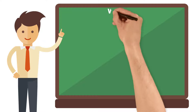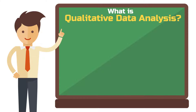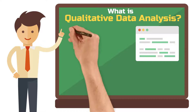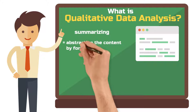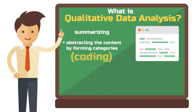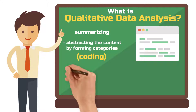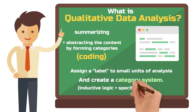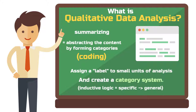Qualitative data analysis can be used to summarize or structure large amounts of qualitative data, for example interview transcripts, documents, or social media postings. Summarizing means abstracting the content by forming categories — a process also known as coding. You assign a label to small units of analysis, such as an answer to an interview question, and can thus present hundreds of pages of text in a single category system. This approach follows an inductive logic, from specific meaning the data to general meaning the categories.